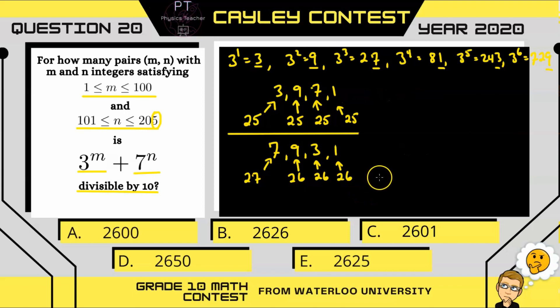Now what we want are the ones digit from 3 to the m plus the ones digit of 7 to the n to equal 10. That way, our new ones digit is a 0 and it's divisible by 10. Now there's four ways that this can happen.